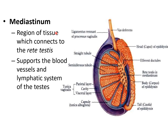About the mediastinum: this is the region of tissue which connects to the rete testis. It supports the blood vessels and lymphatic system of the testis. This is the region of the mediastinum which connects to the rete testis and supports the blood vessels and lymphatic system.